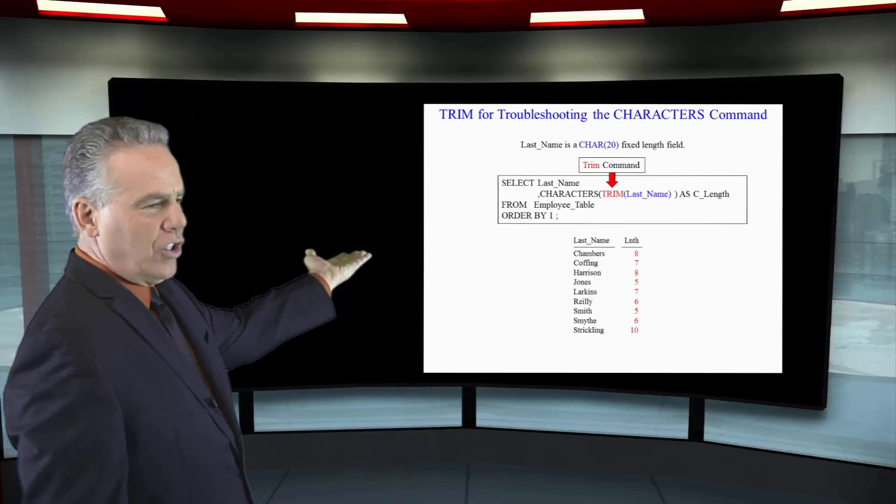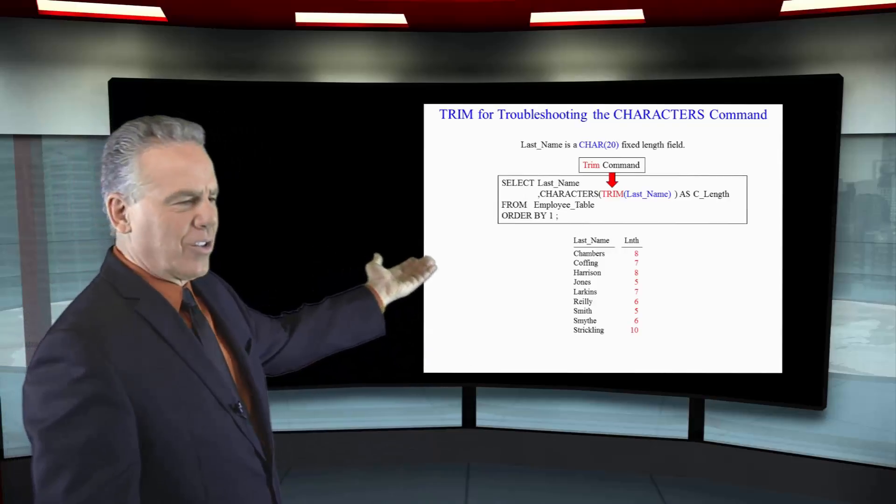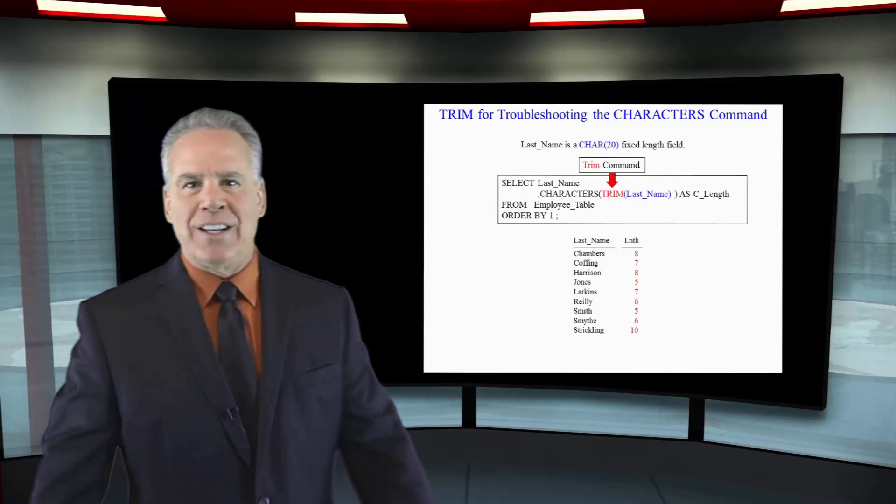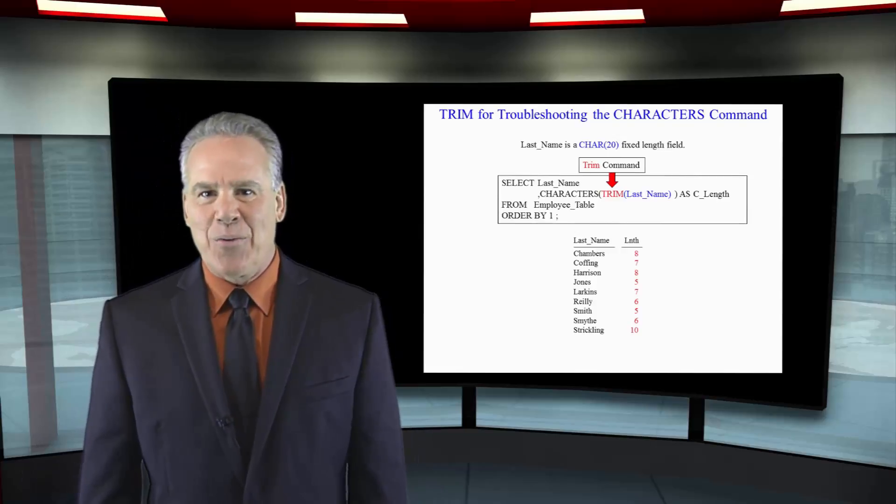And as you can see here, Chambers now has eight characters. Coffing has seven. Harrison has eight. That's the way it's going to work.